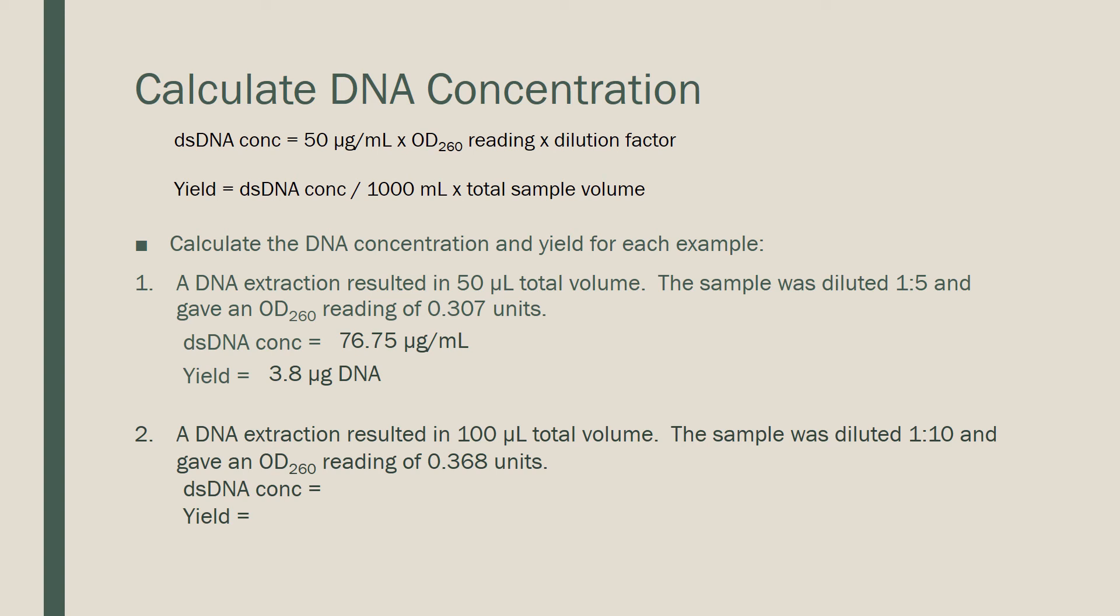Let's work through example 2. This is a DNA prep that gave us a total volume of 100 microliters, diluted 1 to 10, with an OD260 reading of 0.368. To get our concentration, we multiply 50 times 0.368 times 10, our dilution factor. This gives us 184 micrograms per milliliter. Then we take that concentration, 184, divide by 1000, and multiply by 100 to get our yield of 18.4 micrograms of DNA.